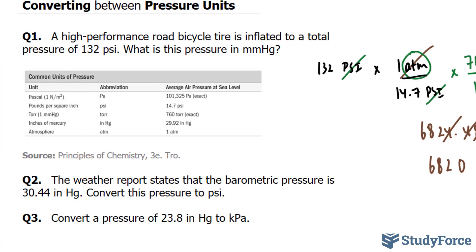In question number 2, we're asked, the weather report states that the barometric pressure is 30.44 inches of mercury. Convert this pressure into psi.